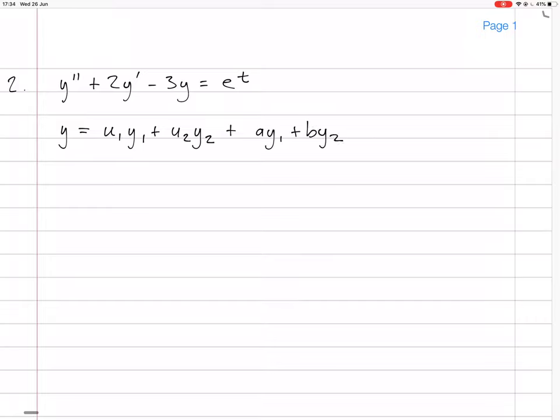Now, where does the y1 come from? The y1 comes from solving the homogeneous system, which we do with the auxiliary polynomial, which is going to be λ² + 2λ - 3. That factorizes into (λ + 3)(λ - 1). So that means y1 = e^(-3t) and y2 = e^t.